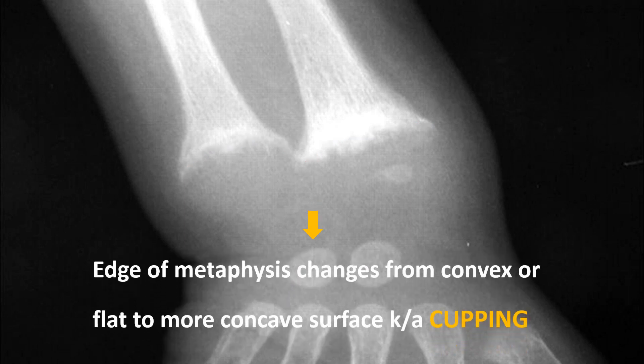The edges of the metaphysis change from a convex or flat surface to a more concave surface. This is known as cupping. Because uncalcified osteoid, whenever in weight-bearing age, gives rise to cupping. In this x-ray you can see the cupping — instead of a convex or flat normal surface, the surface is concave.